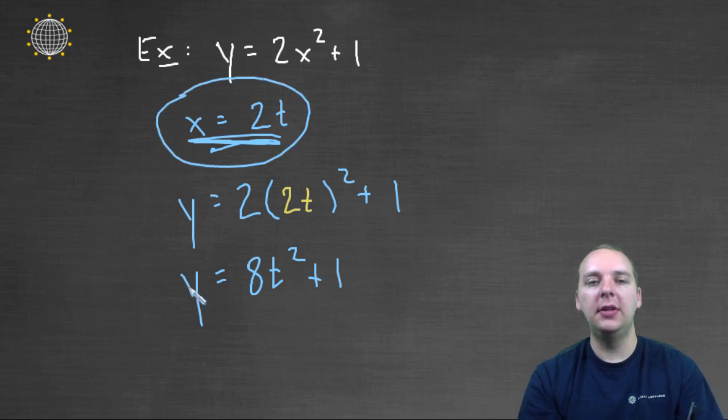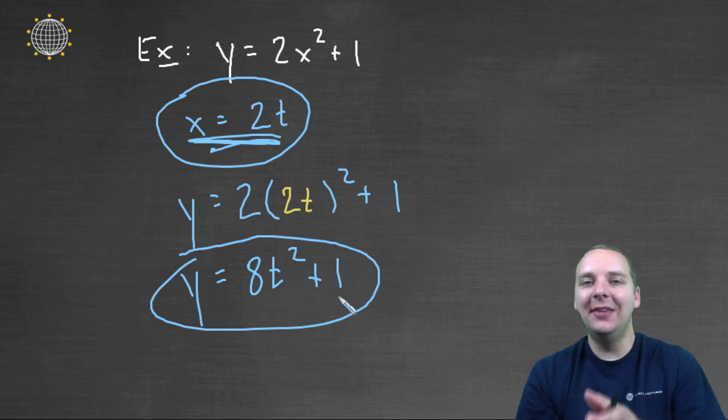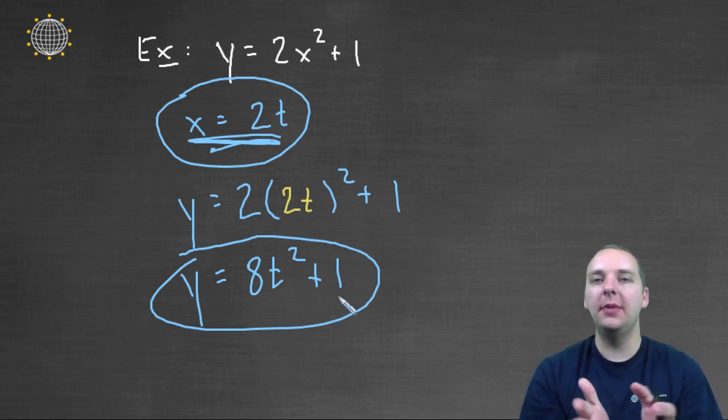So if x equals 2t, and y equals 8t squared plus 1, that's a different parametrization for the same equation.